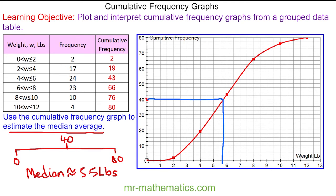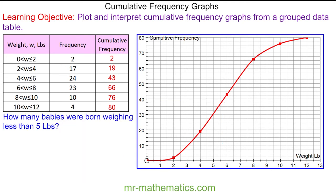We can also use our cumulative frequency graph to estimate the frequency where the weight is less than 5 pounds. We can do this by going up from 5 pounds here to the graph, and then going horizontally across. And all the weights less than 5 pounds are here, which means this is the frequency. So there were approximately 30 babies who weighed less than 5 pounds.